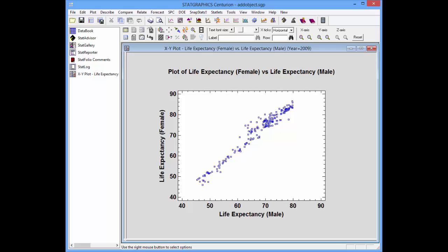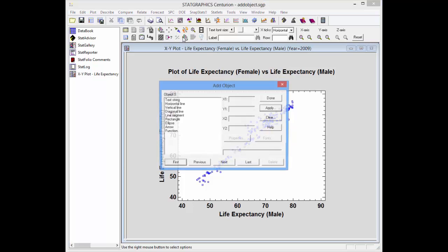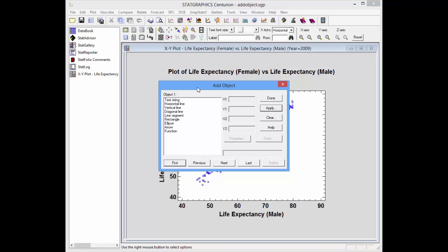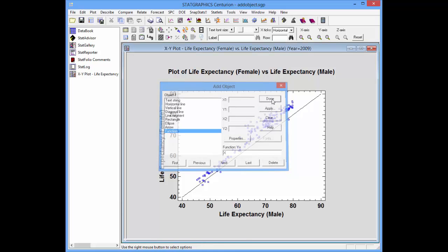I'd now like to add some information to this plot to make it more informative. The first thing I'd like to do is add a reference line showing where female life expectancy is equal to male life expectancy. To do so I'll go up to the analysis toolbar and press the add object button. This opens up a dialog box listing the different objects I can add to the graph. If I select function I can then go down to the function field and type in X, and it will plot a function Y equals X. When I push apply it will be added to the graph.